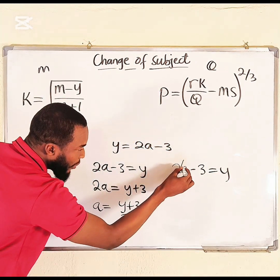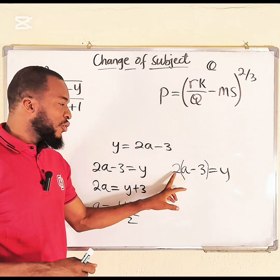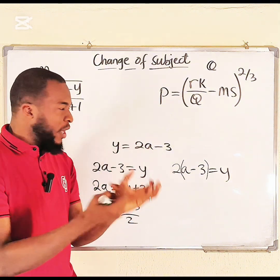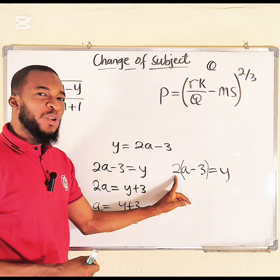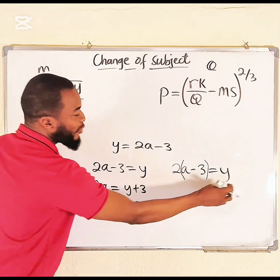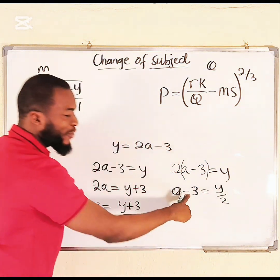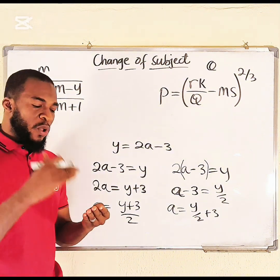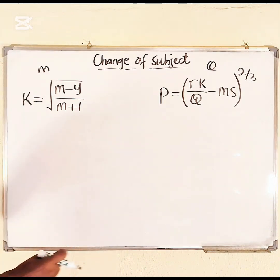Now suppose we have the same equation but with a bracket: 2(a − 3) = y. This time, which is farther away from a — 2 or negative 3? It is 2, because the bracket makes a and −3 one family. Anything outside the bracket is treated first. So divide both sides by 2: (a − 3) = y/2, then take −3 to the other side: a = y/2 + 3. Always start with the term farther from the variable.